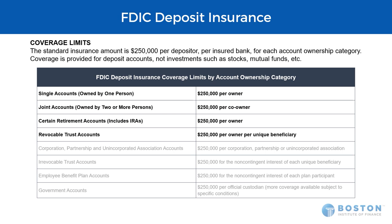Single accounts are pretty easy to understand — one person, one account — but it also includes other things, like a doing-business-as account. Maybe that owner is a small business owner and maintains a separate checking account at the bank for the business. In the eyes of the FDIC, that owner's personal deposit accounts and that doing-business-as account are combined as one, with $250,000 across all of those accounts.